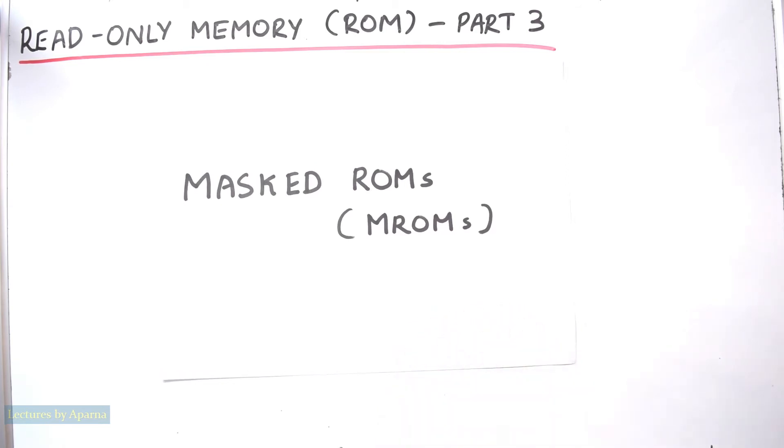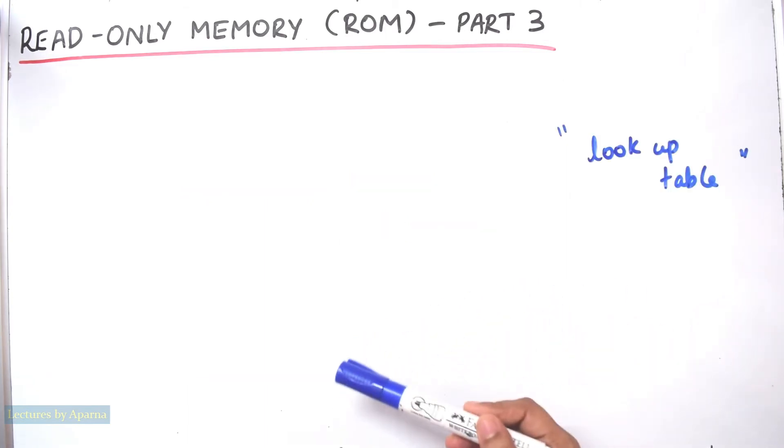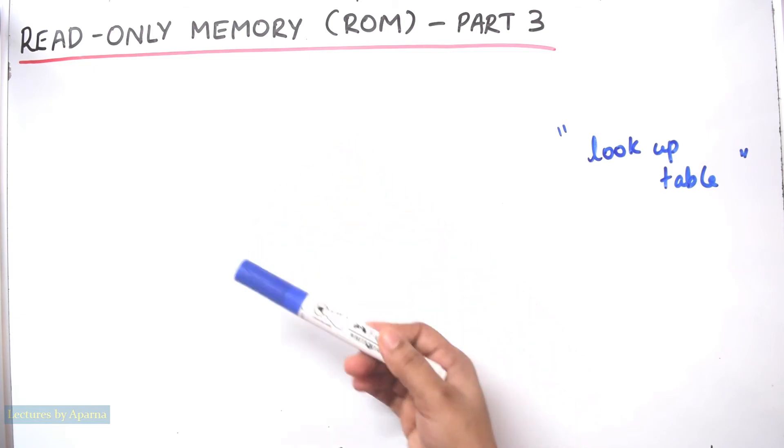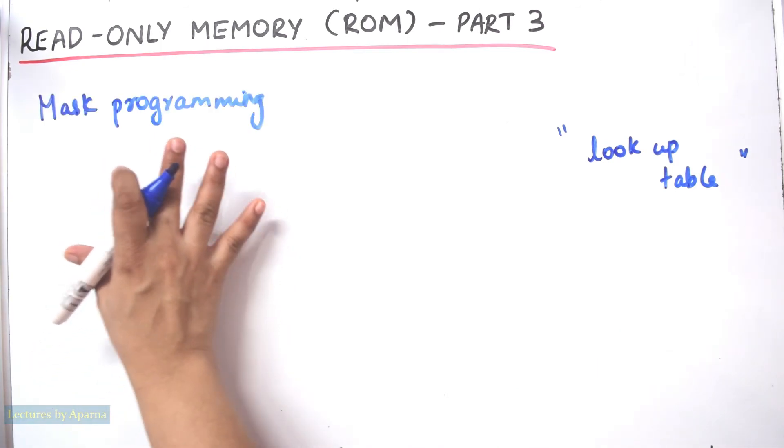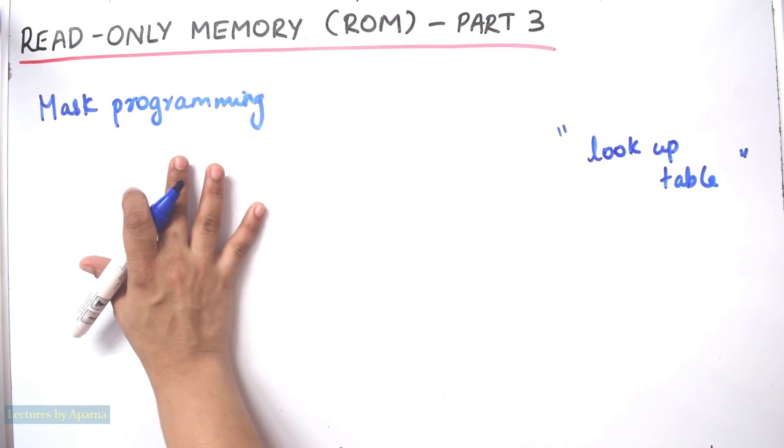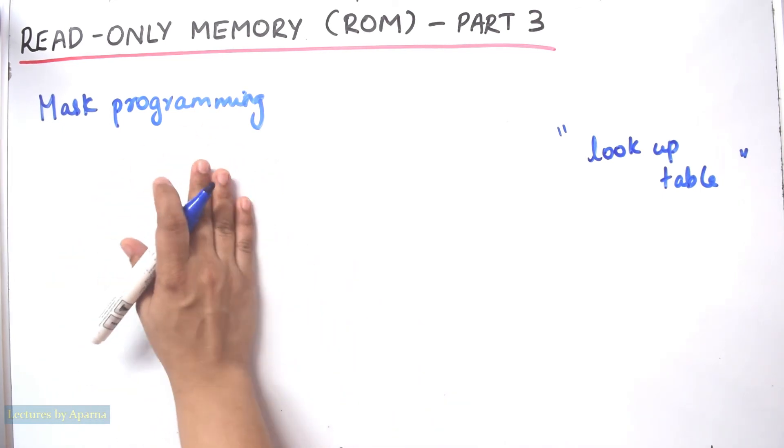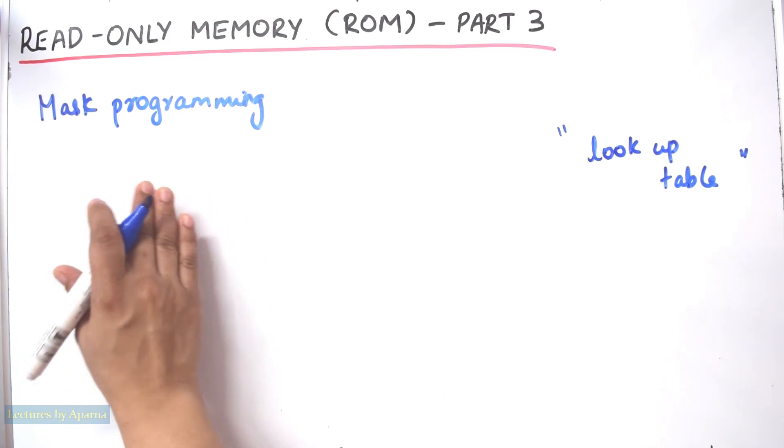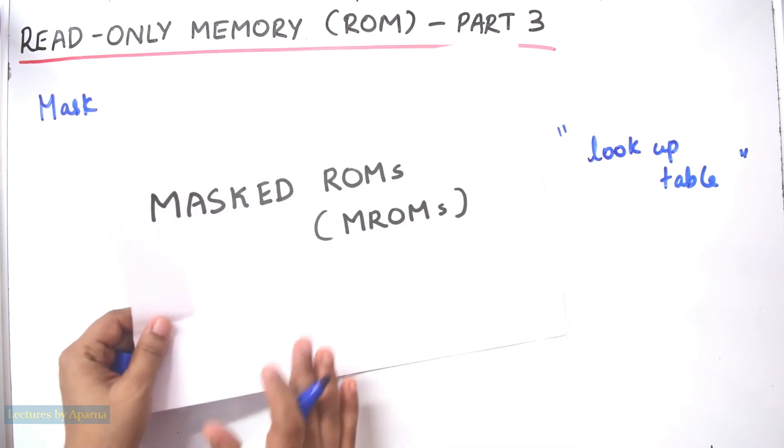For example, if you want to make a lookup table that stores those values of mathematical constants like logarithms, etc., you can store it in a ROM. You send your data to the IC manufacturer and they will put your data into the ROM through the method called mask programming. So mask programming will be used to make as many number of ICs you need, which is usually thousands or above in numbers. So this is called Masked ROM or MROM.